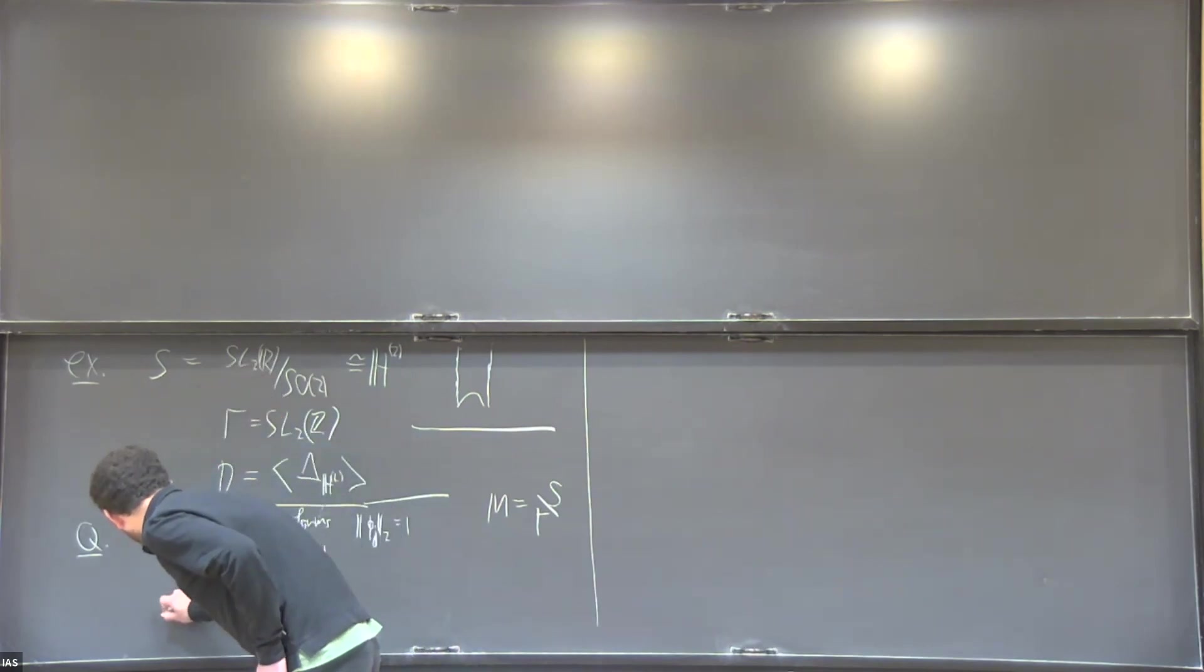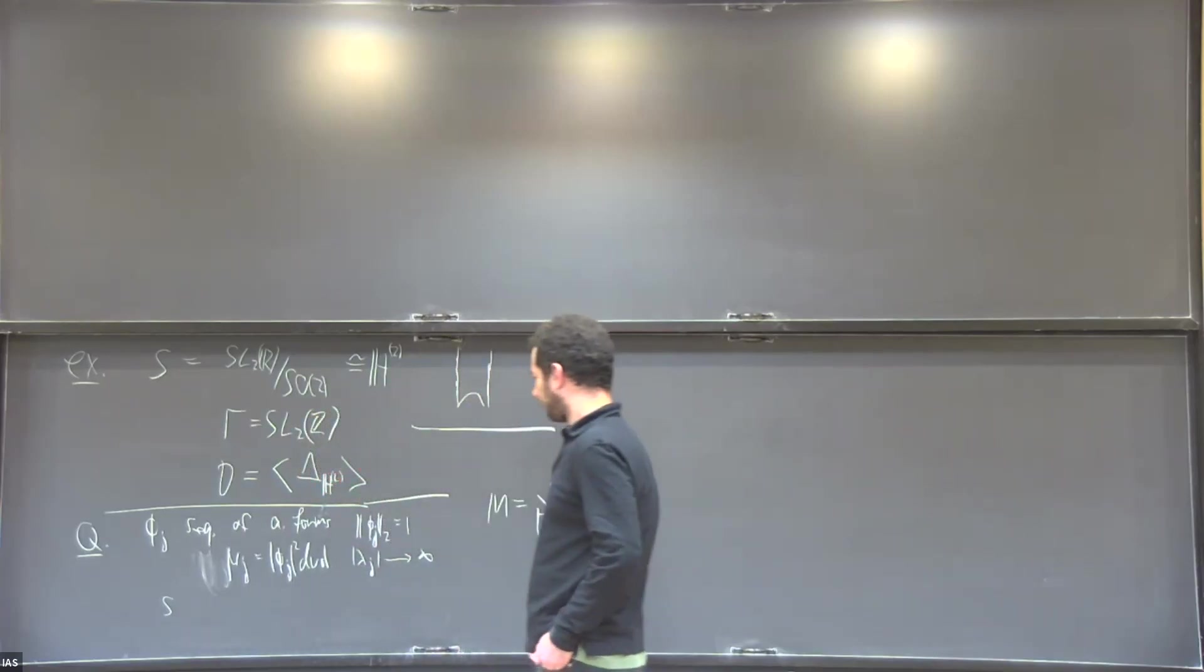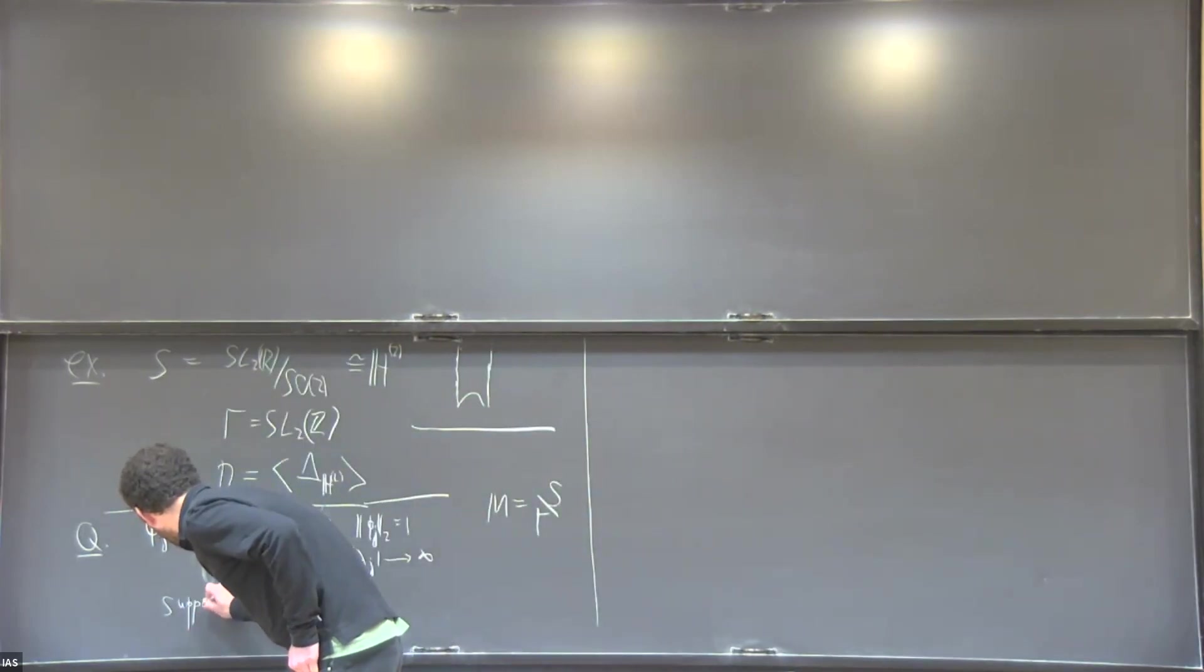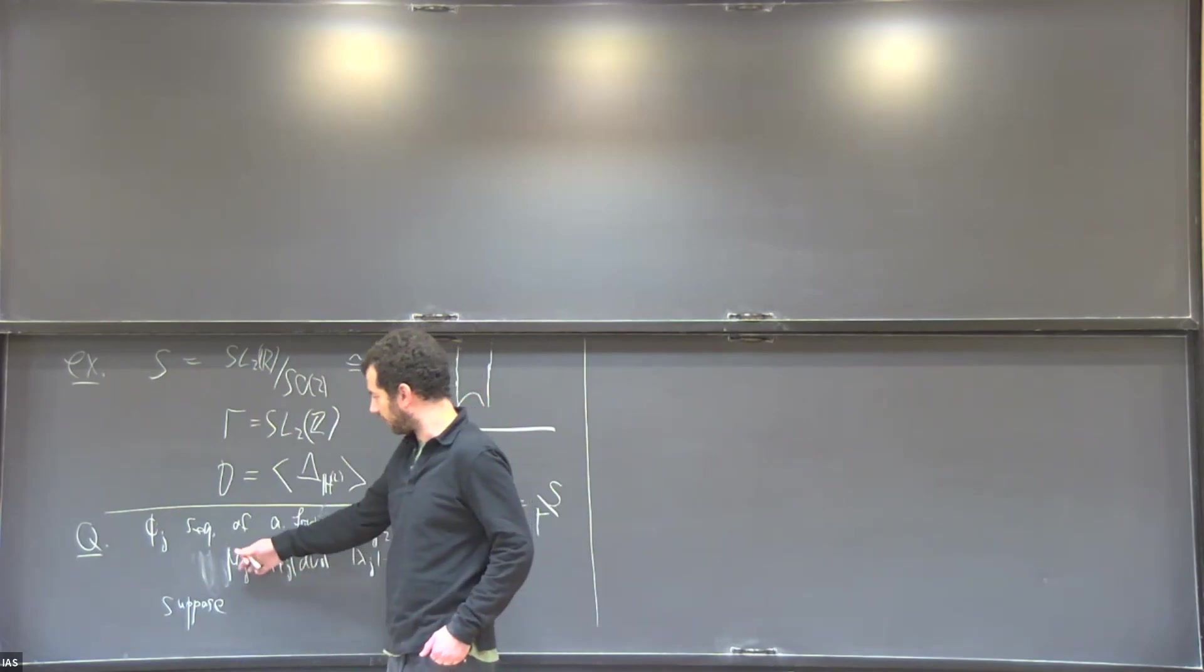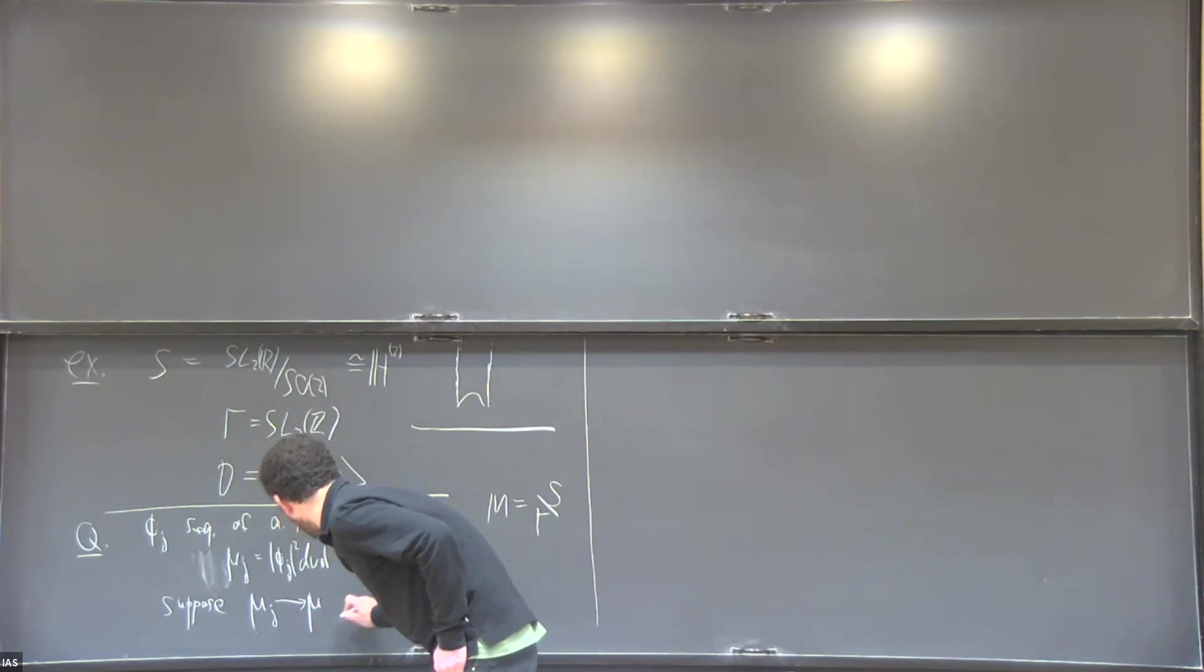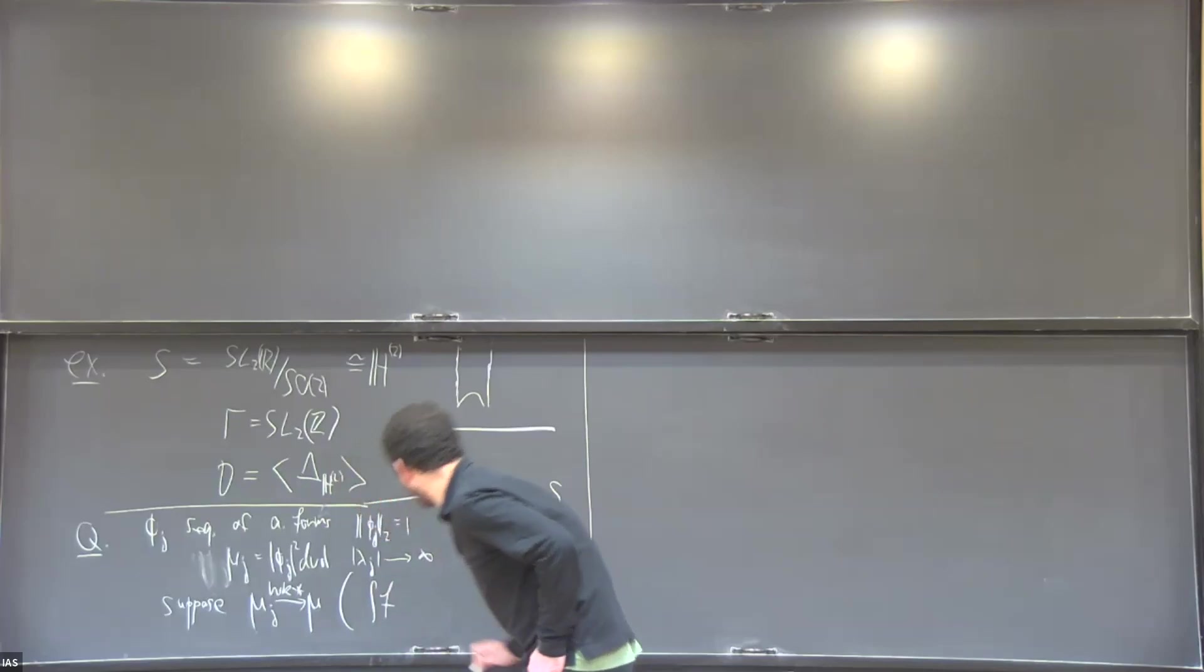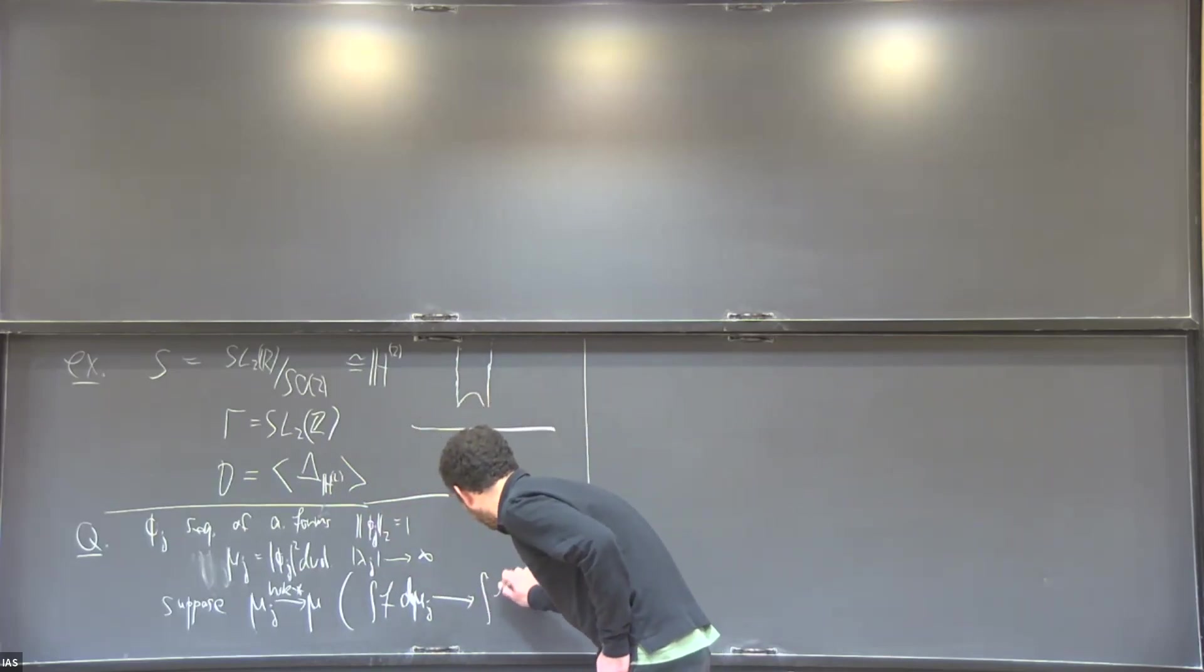I'm also assuming that the eigenvalues of the Laplacian go to infinity. Now suppose that our sequence of measures converges to a measure mu in the weak star topology, which is just saying that the integrals against any continuous compactly supported function converge.